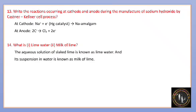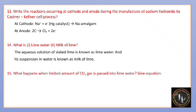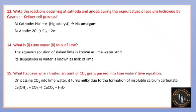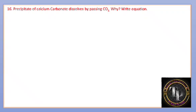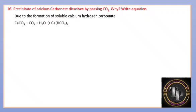What happens when a limited amount of CO2 gas is passed into lime water? On passing CO2 into lime water, it turns milky due to the formation of insoluble calcium carbonate, CaCO3. If excess CO2 is passed, the calcium carbonate reacts further to form calcium hydrogen carbonate, which is soluble in water.